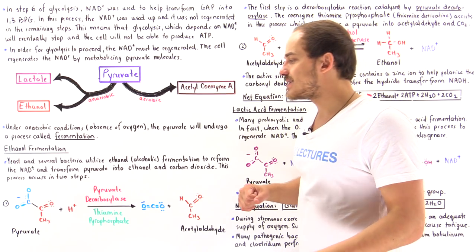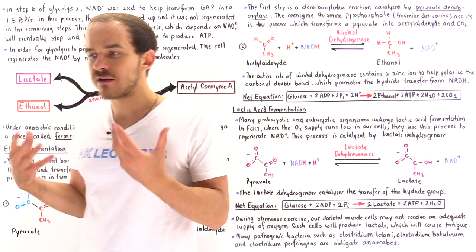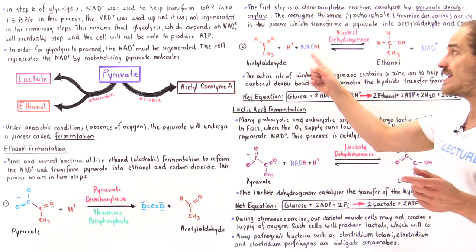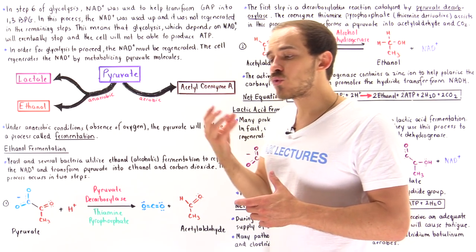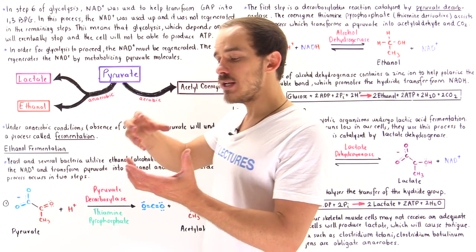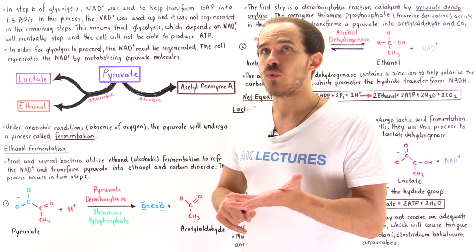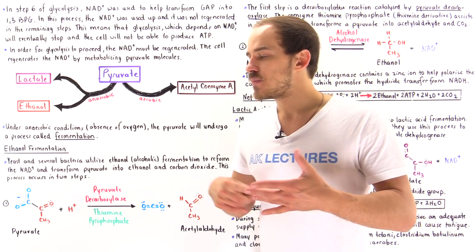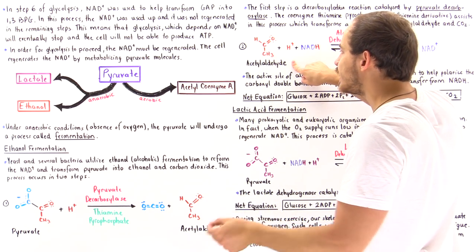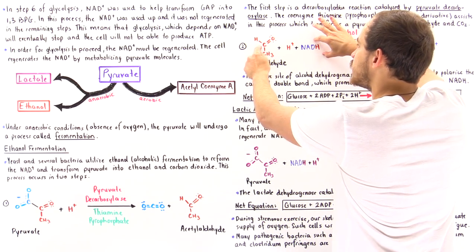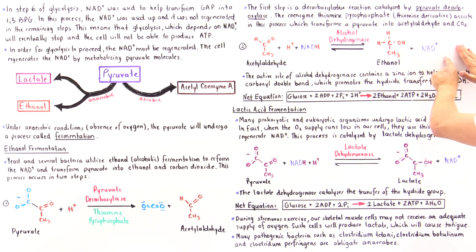In step 2, a different enzyme called alcohol dehydrogenase catalyzes the transfer of a hydride group from NADH onto the acetaldehyde molecule. Examining the active site of alcohol dehydrogenase, we find a zinc ion that bonds with two cysteine residues and one histidine residue. The zinc ion interacts with the substrate, polarizing and weakening the bond, which allows the hydride to attack the carbonyl carbon while H is picked up by the oxygen. Ultimately, we form ethanol and regenerate NAD+.